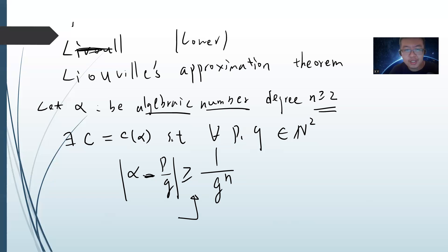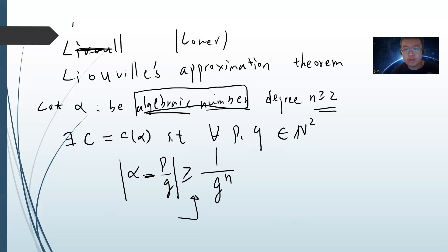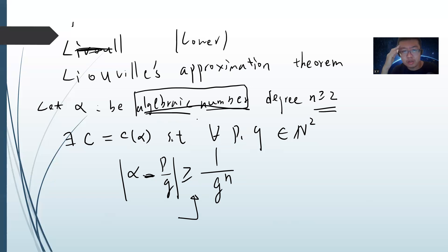The proof is very elegant. Note that this requires alpha to be algebraic. The contrapositive is key: if you can find a number which violates the theorem, that means alpha is not algebraic — it must be transcendental. This is how Liouville constructed the first known transcendental number.